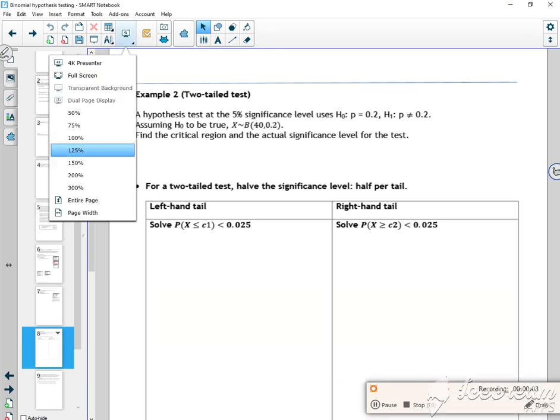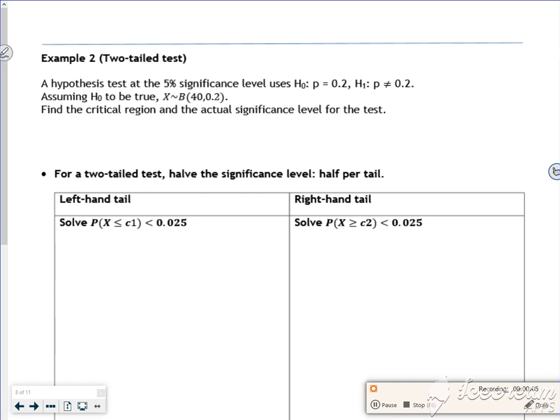For this one we're going to find the critical region using a two-tailed test. The hypothesis test at a 5% significance level uses H₀: P = 0.2 and H₁: P ≠ 0.2. So we know it's two-tailed.